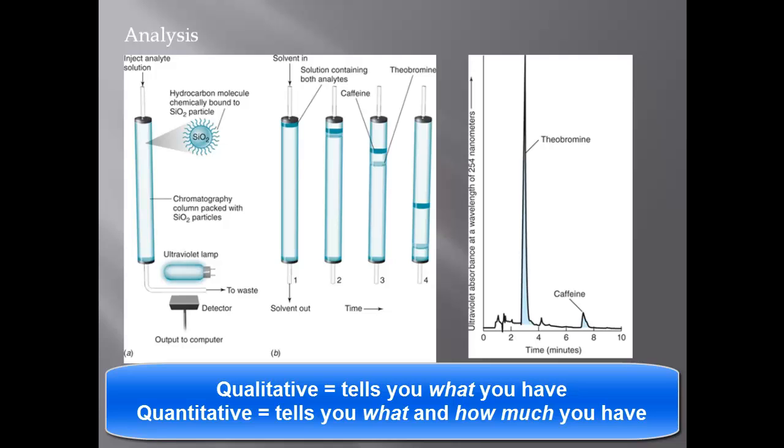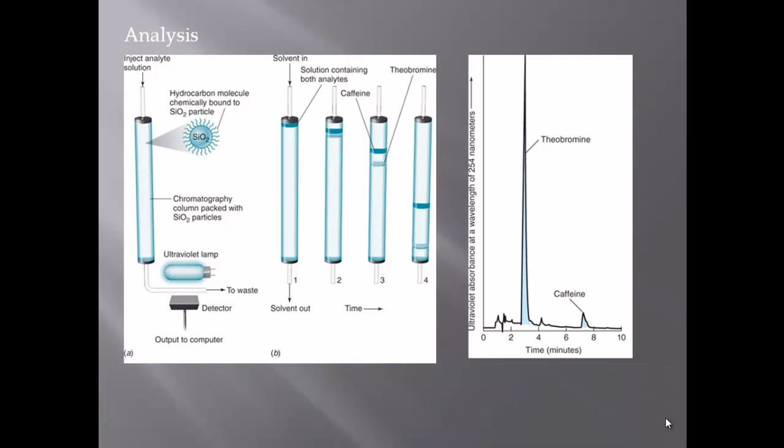I want to talk about calibration curves next. If I have a small concentration of something, it should give me a small response. If I have a large concentration of something, it should give me a larger response. And a graph that shows a detector response as a function of analyte concentration is called a calibration curve or a standard curve. Let's talk about that next.